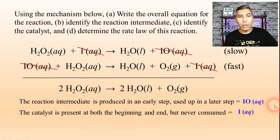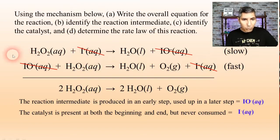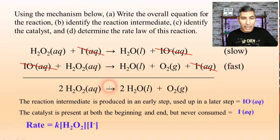Now part D says determine the rate law of this reaction. So just like we learned in our last video, the slow step is the one that determines the rate of the reaction. And so the slow step is step one. And so we have rate equals k times [H₂O₂] times [I⁻]. And so there we have the rate law for this catalyzed process.